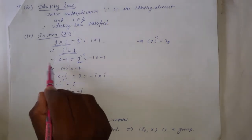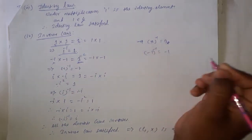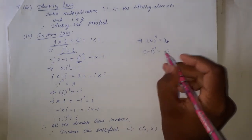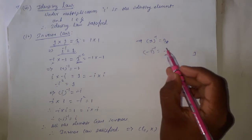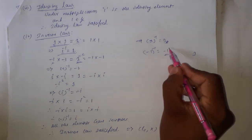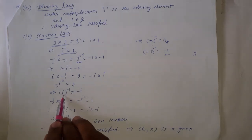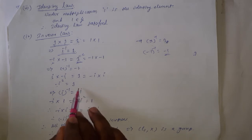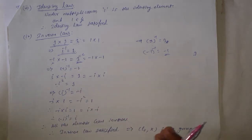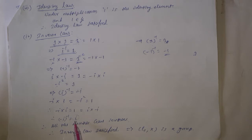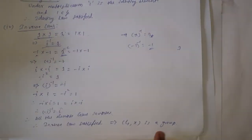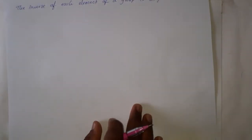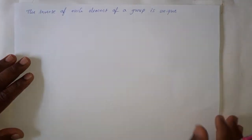So therefore, -1 is the inverse of -1, that is, inverse of -1 is equal to -1. By multiplying -1 by any other element we do not get +1 as the product. So the only possible value of the inverse of -1 is -1. It is the unique value of the inverse of each and every element. So this is a particular example.